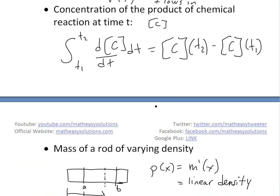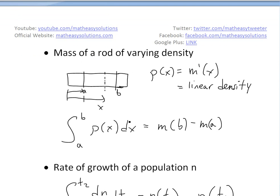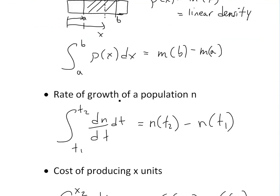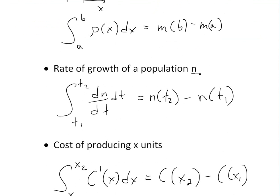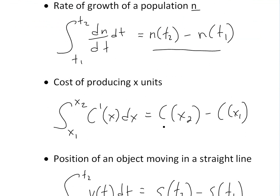Also if you look at the mass of a rod with varying densities: if you have a rod measured from A to B, and you have the density function ρ(x) — that's usually how density is written — it's going to be the derivative of M of x, which is just the mass at any point. The integral of this varying density equals the net change in mass, or in this case the total mass between A and B. And also the rate of growth of population: if the population is changing per year or month, the integral gives you the net growth change.